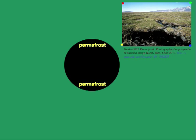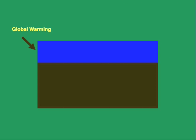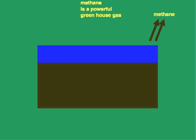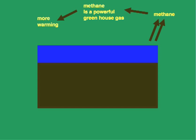Another possible scenario related to global warming is the melting of the permafrost — the permanently frozen part of the soil in the tundra. If global temperatures rise, predictions are that the permafrost would begin to melt. With the melting of permafrost comes increased decomposition, which releases methane gas into the atmosphere. Over time, more melting releases more methane. Methane is a powerful greenhouse gas, so with more methane there is even more global warming.